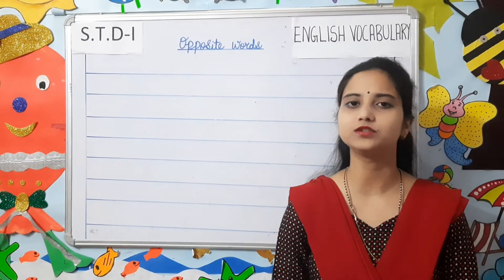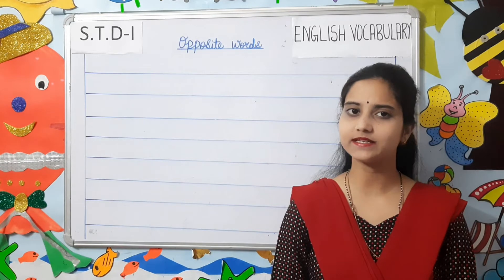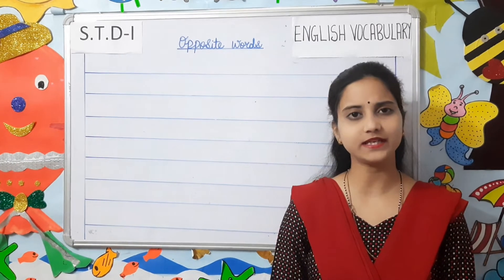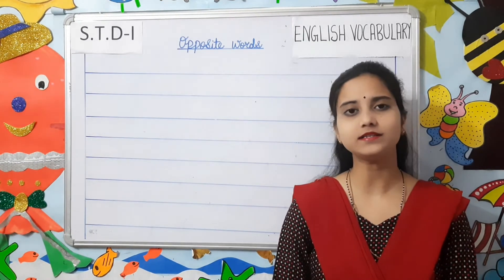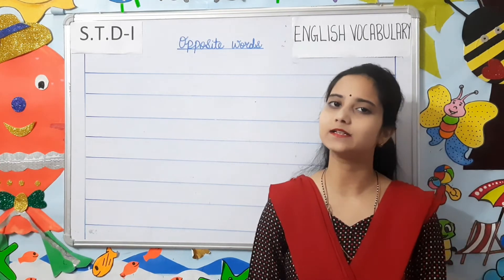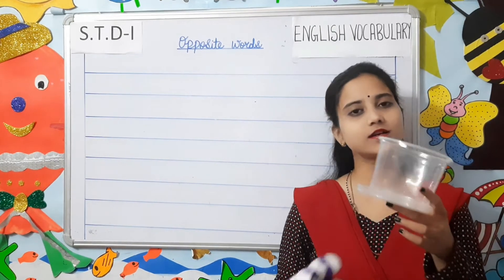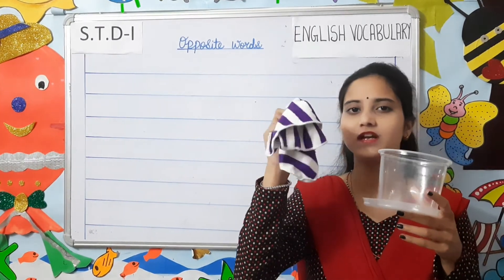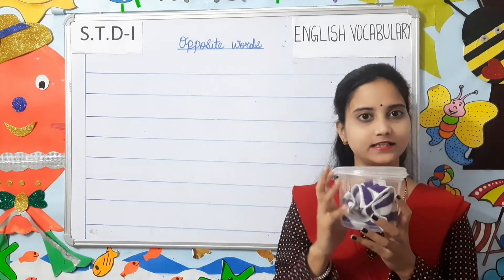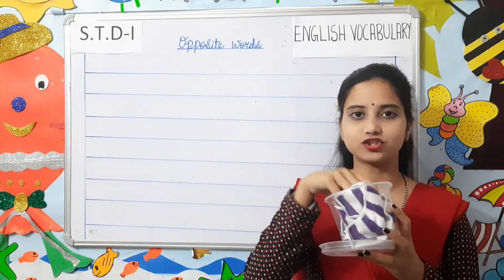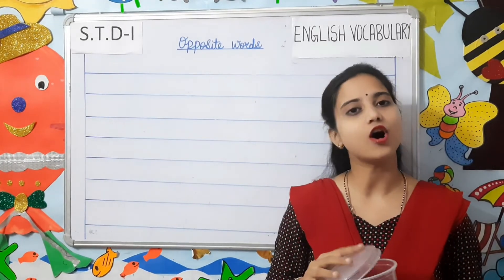Now let us move on to another topic — opposite words. Opposite words are different; they are not the same, meaning a word that expresses a meaning opposite to another word. They are related but not the same. For example, you can see a box in my hand and a handkerchief. If I put the handkerchief inside the box — it is inside. If I take the handkerchief outside the box — it is outside. So inside and outside are opposite words.